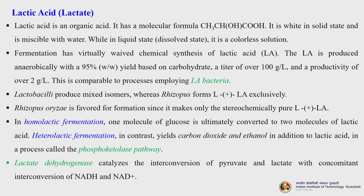This is comparable to processes employing lactic acid bacteria. Lactobacilli produce mixed isomers whereas Rhizopus oryzae forms L(+) lactic acid exclusively. Rhizopus oryzae is favoured since it makes only the stereochemically pure L(+) lactic acid. In homolactic fermentation, one mole of glucose is ultimately converted to 2 moles of lactic acid. Under heterolactic fermentation, we get carbon dioxide and ethanol in addition to lactic acid in a process called the phosphoketolase pathway. The enzyme lactate dehydrogenase catalyzes the interconversion of pyruvate and lactate with concomitant interconversion of NADH and NAD⁺.